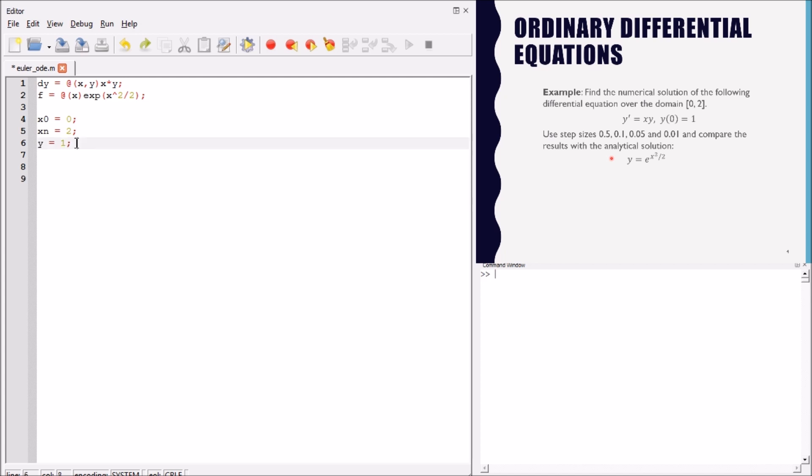We have the initial condition. This is the initial condition, the value of y at x sub-zero. The step size is 0.5, so we define the step size h.